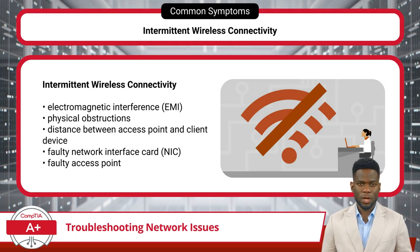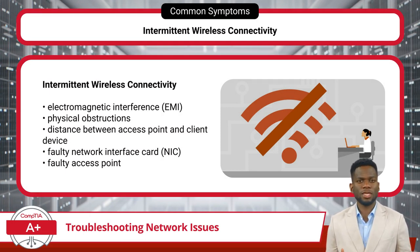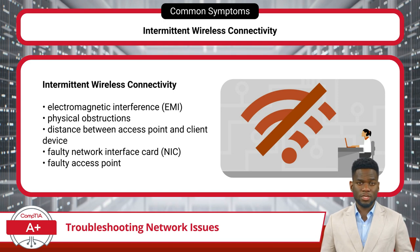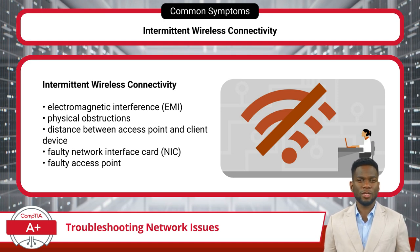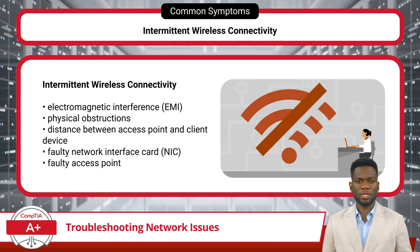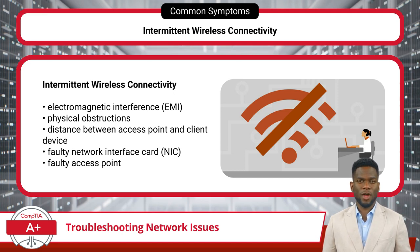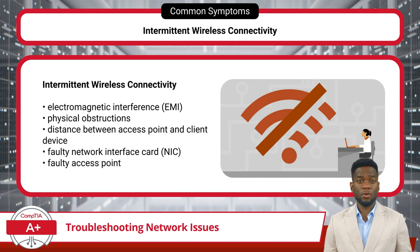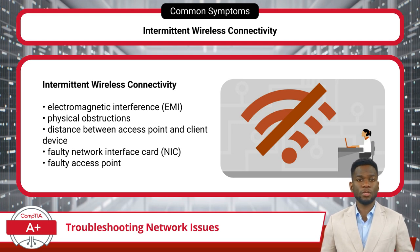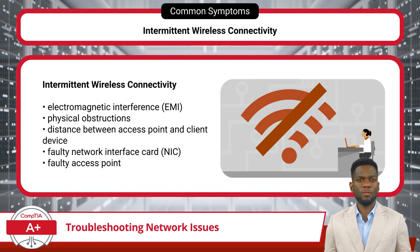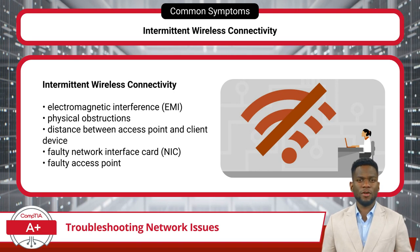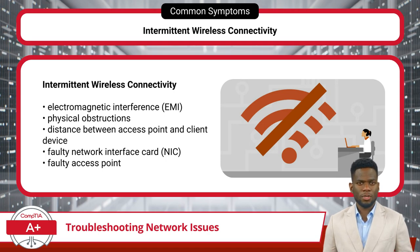Intermittent wireless connectivity, a prevalent issue in wireless networks, can stem from various factors. Alongside electromagnetic interference, physical obstructions like walls, furniture, or other obstacles can weaken wireless signals, leading to signal loss or degradation. Additionally, the distance between a client device and an access point can exacerbate signal attenuation. Faulty hardware, such as network interface cards or access points, can also compound intermittent wireless connectivity problems. If hardware components are malfunctioning or outdated, they may struggle to establish a stable connection or maintain consistent signal strength.